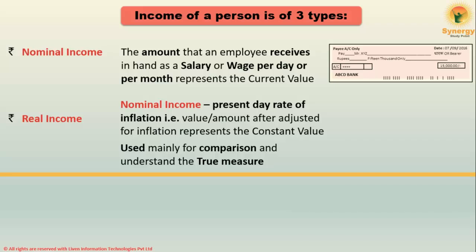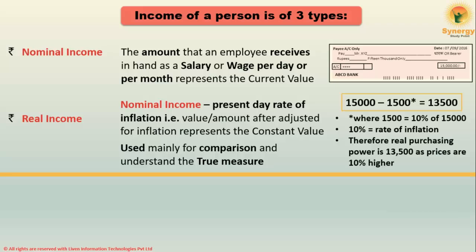Real income is represented by nominal income minus the present day rate of inflation — that is, the value after adjusting for inflation. This represents a constant value and is used mainly for comparison and to understand the true measure of income. For example, if your nominal salary is 15,000 and inflation is 10%, then 1,500 is deducted, and what remains — 13,500 — is your real income.